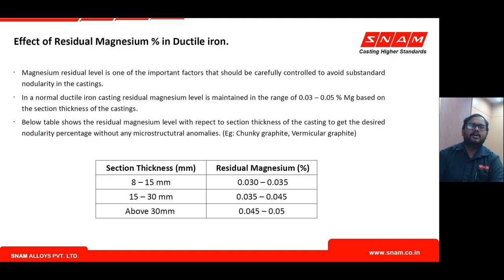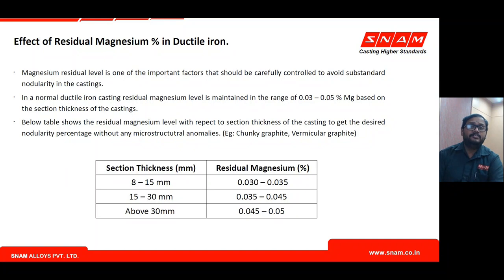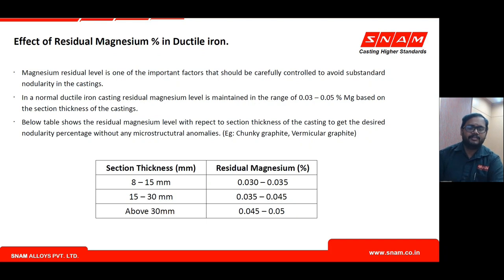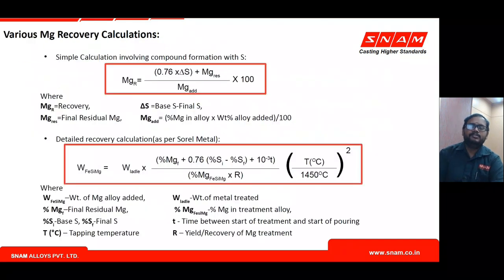A foundry may have thin-section, thick-section, and average-section castings. The alloy selection, addition rate, and residual magnesium targets should vary for different castings. Applying the same residual magnesium target — say 0.035 to 0.045% — across all castings is incorrect, because worst-case conditions requiring more residual magnesium differ from normal castings where high residual magnesium is actually dangerous.